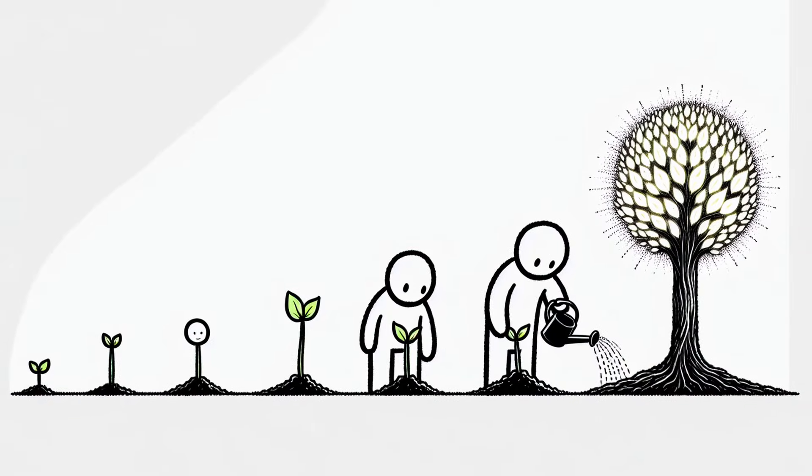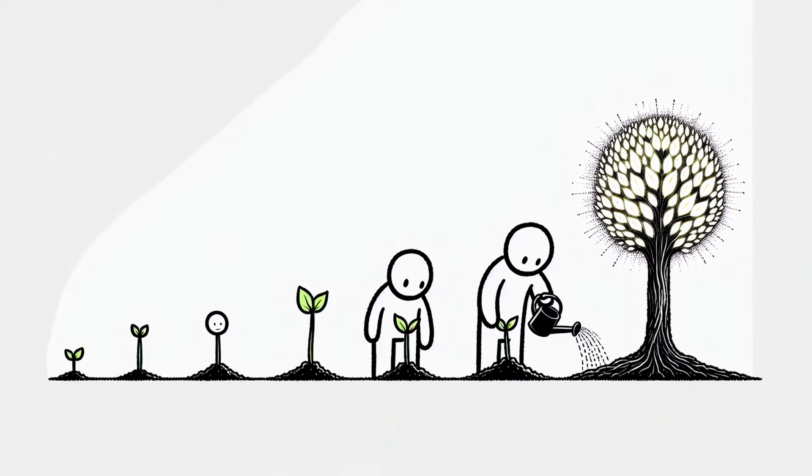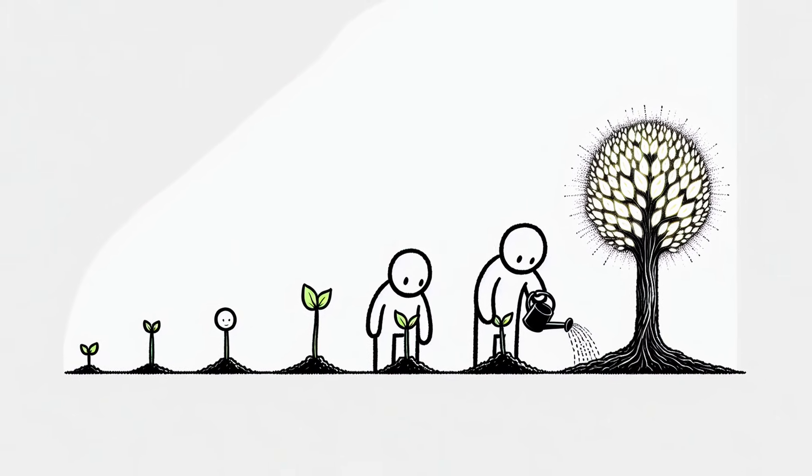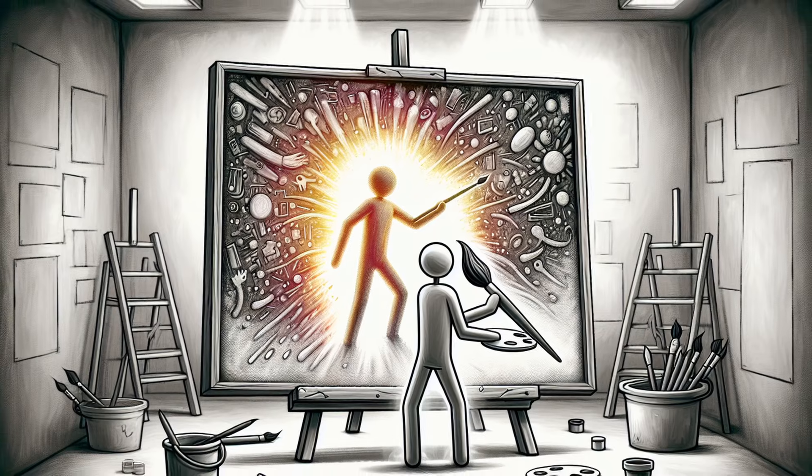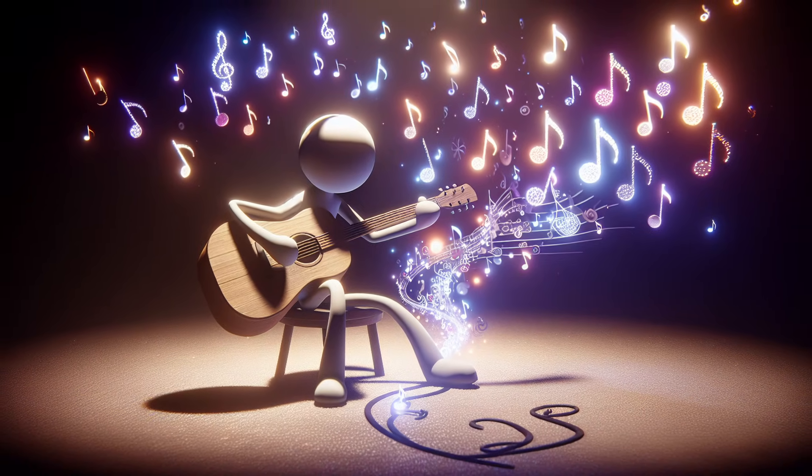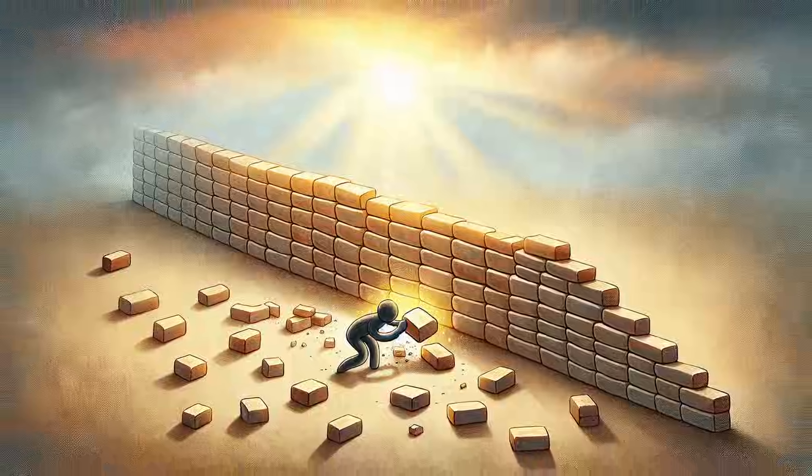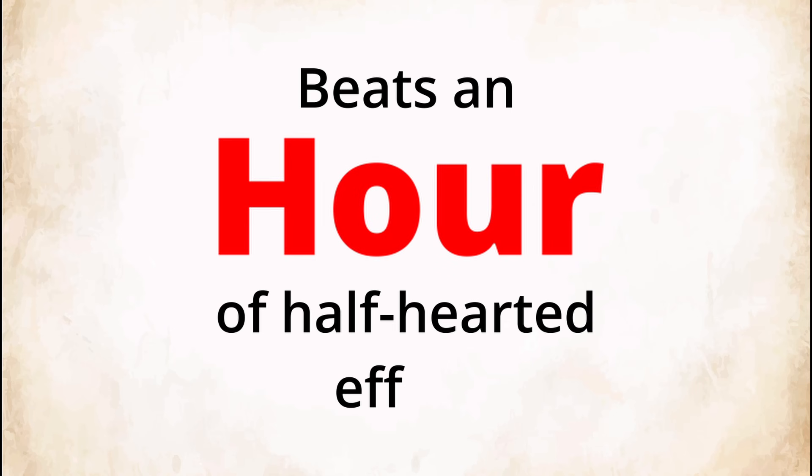Think of it like watering a plant. You don't flood it once a month and expect it to grow. You water it a little every day, and over time, the roots take hold. 10 minutes of daily practice works the same way. The short sessions keep the neural circuits active, strengthening them until they become ingrained. The key is quality. 10 minutes of distraction-free practice, where you're fully engaged, beats an hour of half-hearted effort.